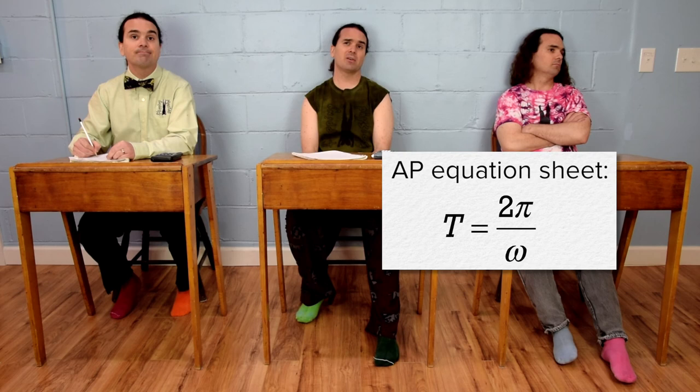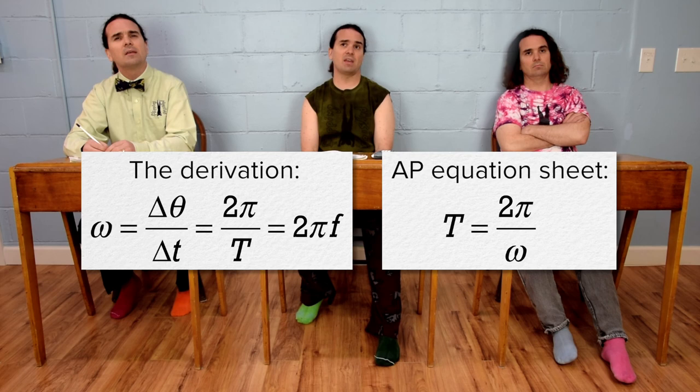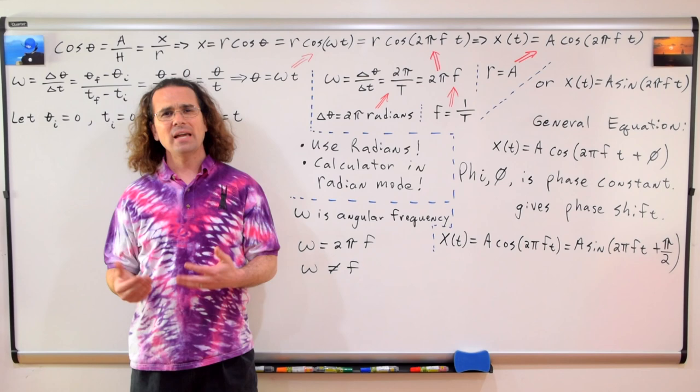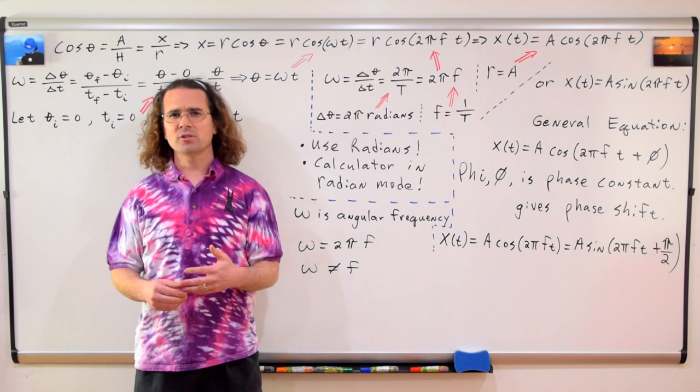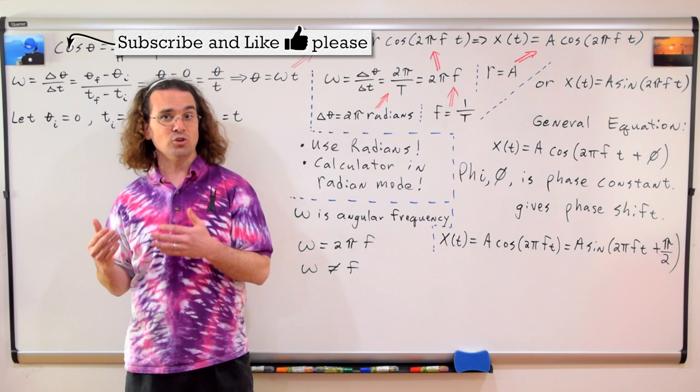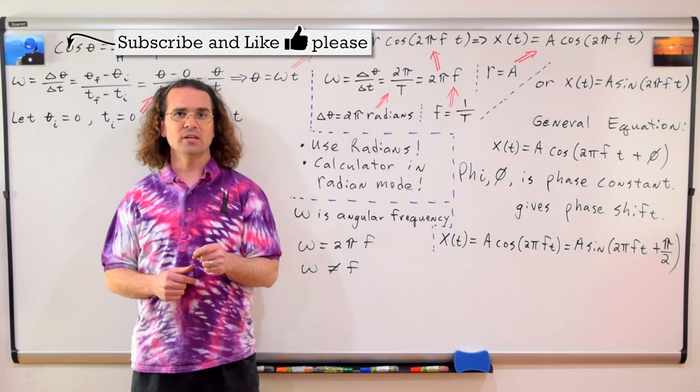One of these equations is kind of on our equation sheet. The AP Physics equation sheet has period equals 2 pi over angular frequency, which is the same as what we derived: angular frequency equals 2 pi divided by period. Knowing how to derive the equation for angular frequency of simple harmonic motion is very important for your understanding of the physics and helps you remember that the angular displacement used to derive the equations for simple harmonic motion uses radians and not degrees. Therefore, your calculator needs to be in radian mode when using the equations for simple harmonic motion.